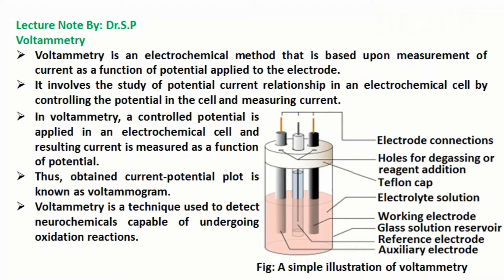In this tutorial we will discuss voltammetry. Voltammetry is an electrochemical method based upon measurement of current as a function of potential applied to the electrode. It involves the study of potential-current relationship in an electrochemical cell by controlling the potential and measuring current. A controlled potential is applied and the resulting current is measured as a function of potential. The thus-obtained current-potential plot is known as a voltammogram.